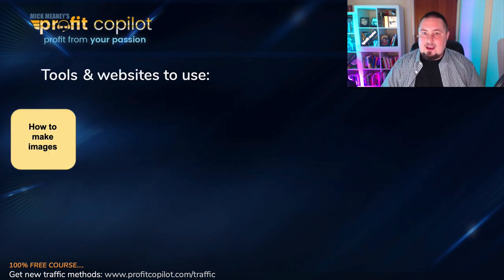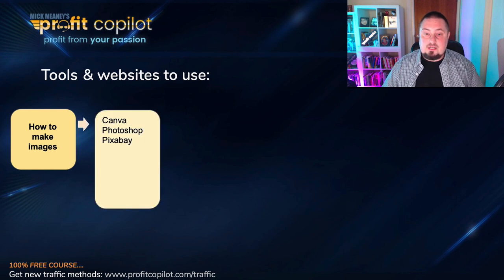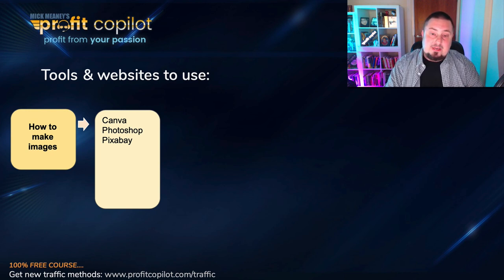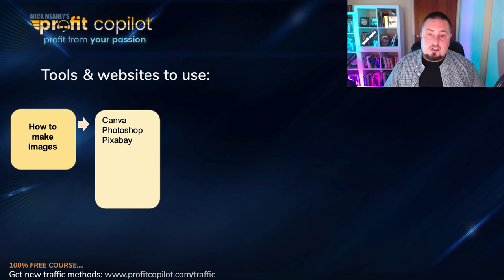How do you make this type of content? For images, the tools and websites to use are Canva and Photoshop — though you don't have to use Photoshop. You can use Pixabay to get free, royalty-free images. If you're just starting out or don't want to get too technical with Photoshop, just use Canva — it's very good. Canva.com.